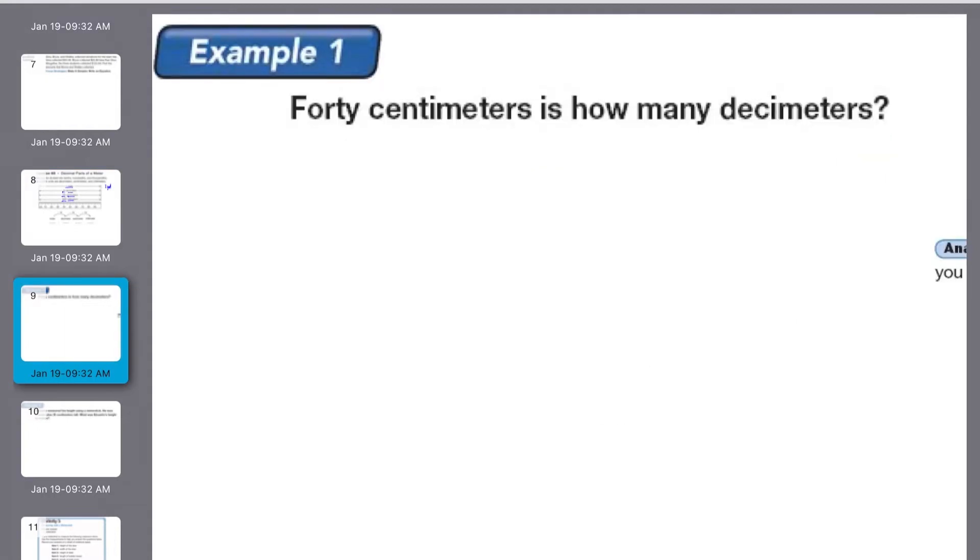So 40 centimeters is how many decimeters? Well a decimeter would be equal to ten centimeters. So if you have 40 it would be four decimeters.